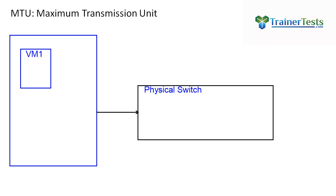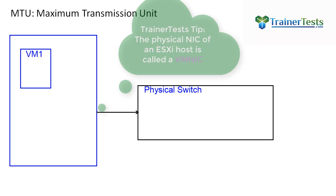Here on the left side of the screen, we have our ESXi host. Within that ESXi host, I have some virtual machines that are running. Let's go ahead and create a virtual machine here. My VM is going to be generating some sort of network traffic that's going to be sent out of the host and into the physical network. The ESXi host is connected to a physical switch, and as VM one generates that traffic, we're going to have an MTU configuration on the virtual switch.